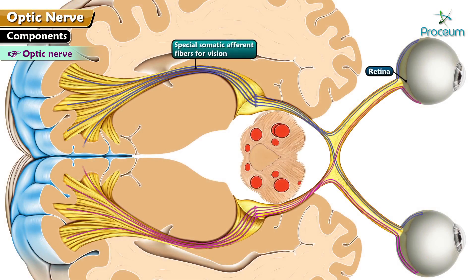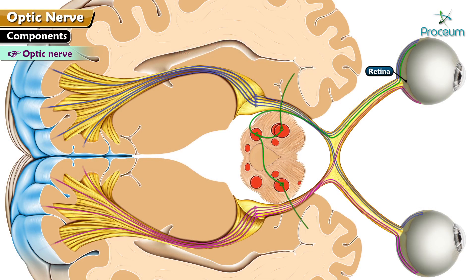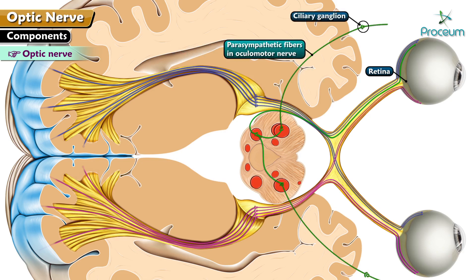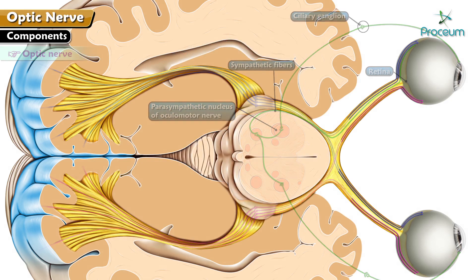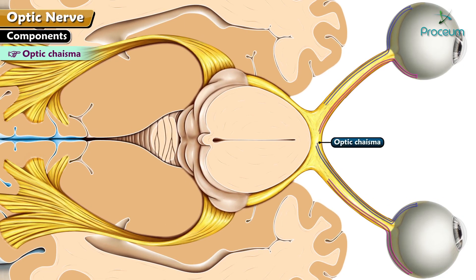These fibers pass to the brain and mediate the afferent limb of the pupillary light reflex, whereas parasympathetic fibers in the oculomotor nerve mediate the efferent limb. At the optic chiasma, fibers of each optic nerve decussate partially to form the optic chiasma.